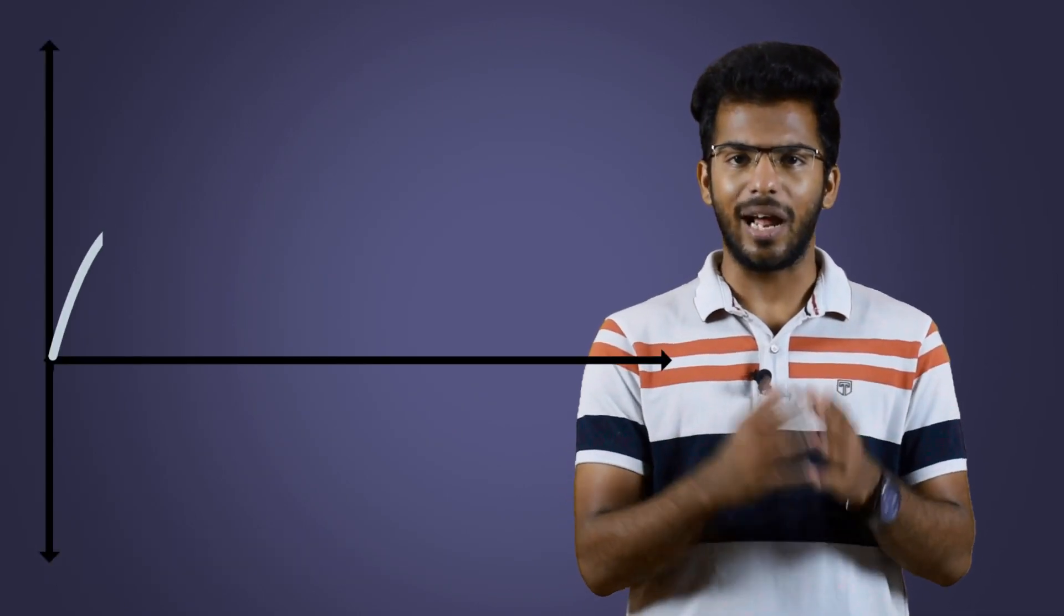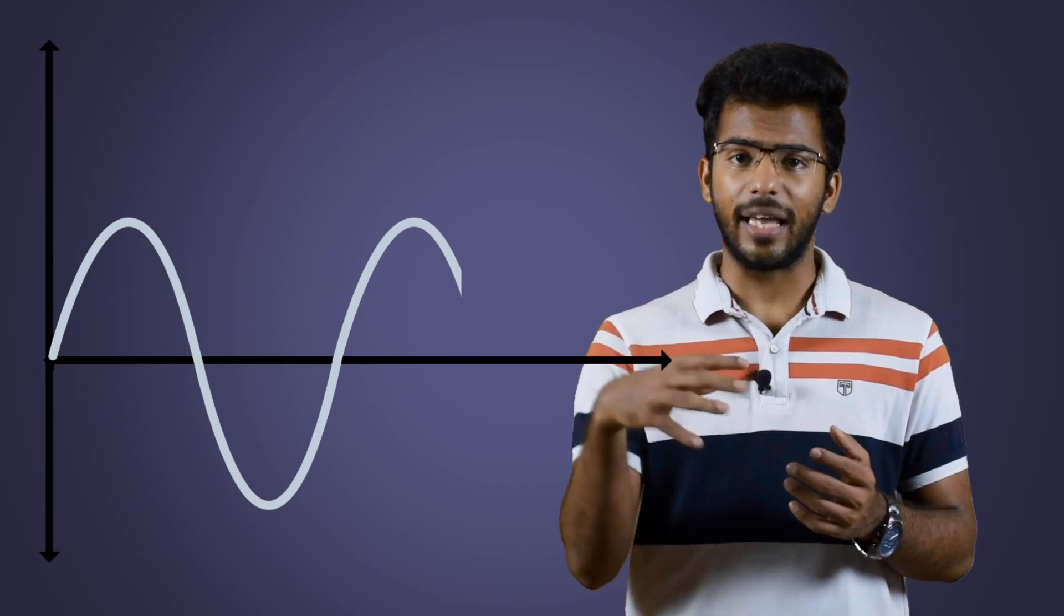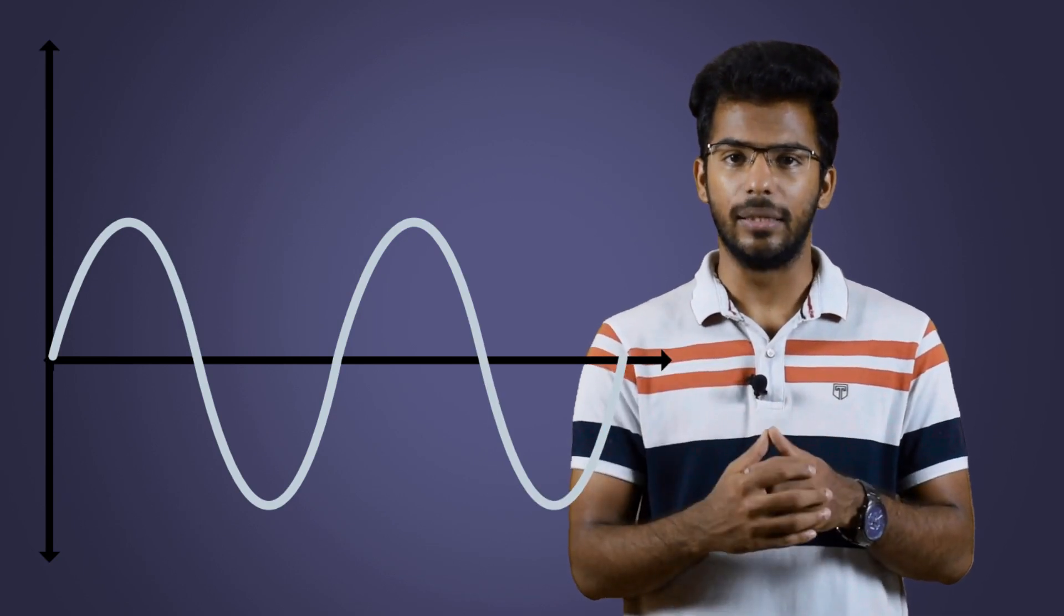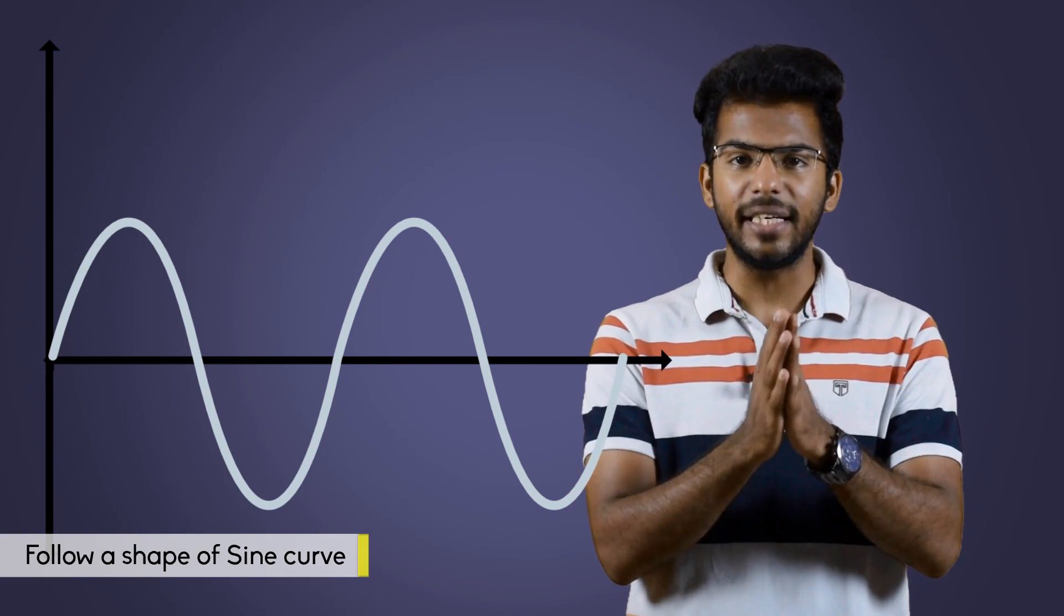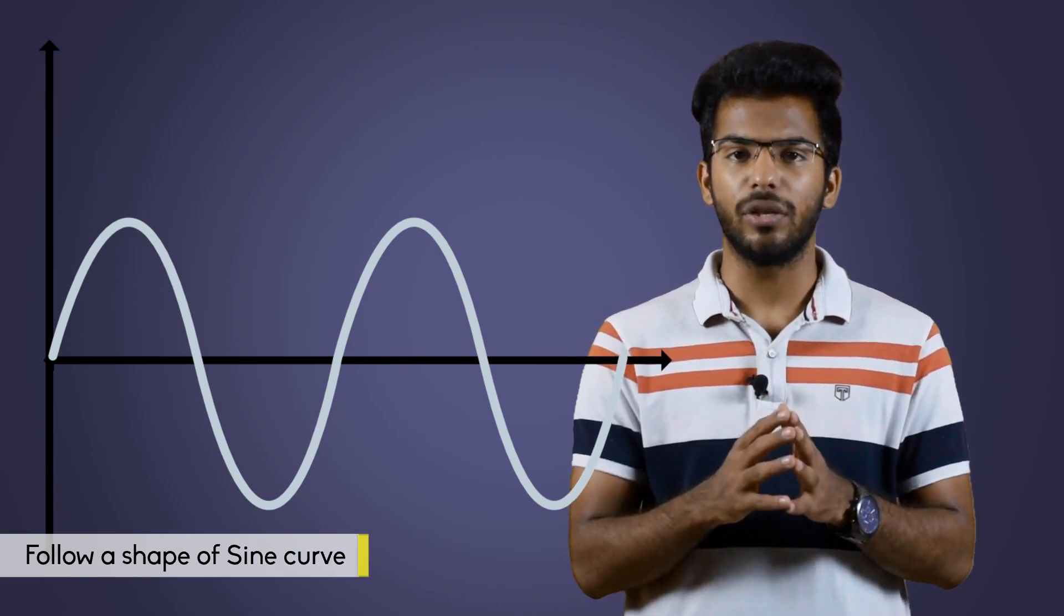The alternating current and voltage change the direction every half a cycle. Hence, they follow a shape of sine curve or sinusoidal waveform.